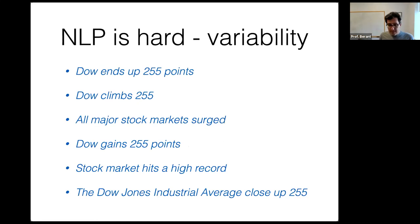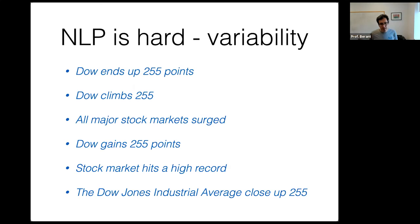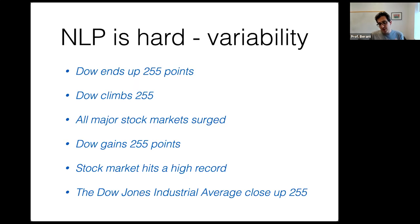The second problem is variability — the opposite of ambiguity. Not only can the same sentence mean many things, but the same meaning can be expressed in many different ways. Models that process language must be robust to this variability, transforming from the many possible forms of expression to the underlying meaning. This is the second major challenge in natural language processing.